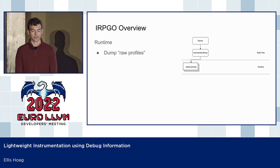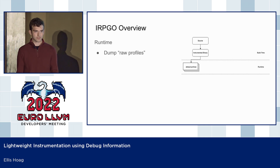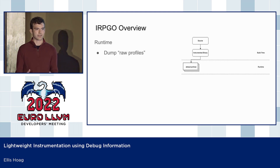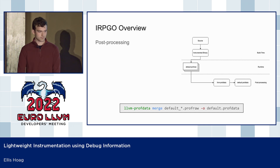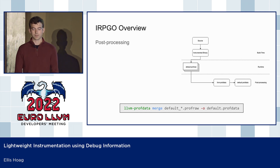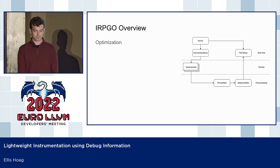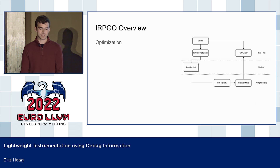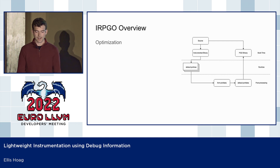After we've created an instrumented binary, we can run it one or more times. The runtime will dump a raw profile called default.profraw. These files contain all the instrumentation statistics gathered in those executions. Then we use the LLVM prof data tool to post-process the data and produce a final optimization profile called default.profdata. Finally, we can feed the optimization profile into the compiler to produce an optimized binary that is shipped to production.